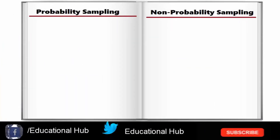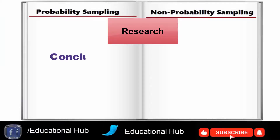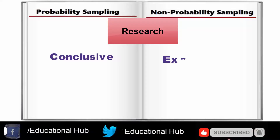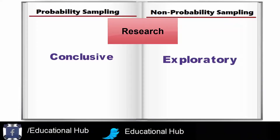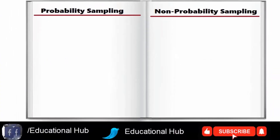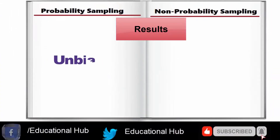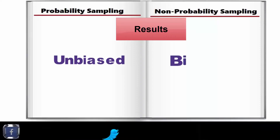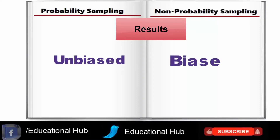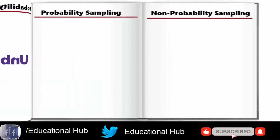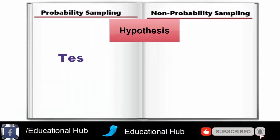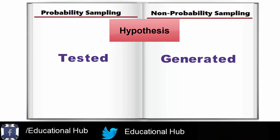5. Research: probability sampling is used when the research is conclusive in nature; on the other hand, when the research is exploratory, non-probability sampling should be used. 6. Result: the results generated by probability sampling are free from bias, while the results of non-probability sampling are more or less biased. 7. Hypothesis: probability sampling tests a hypothesis, but non-probability sampling generates it.